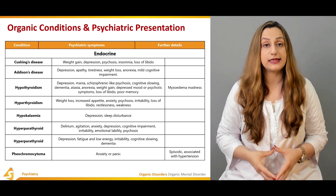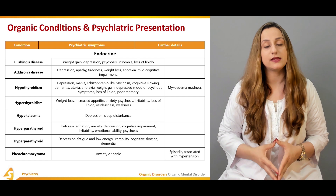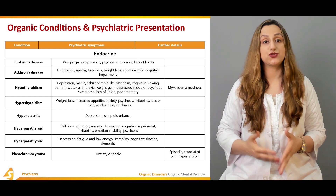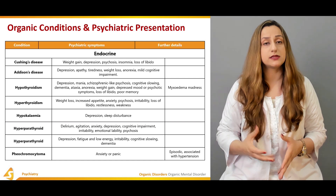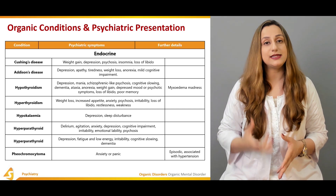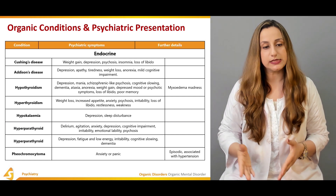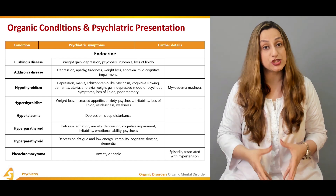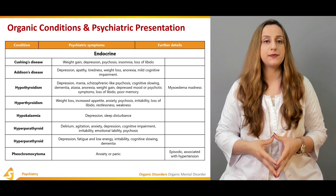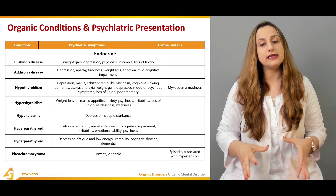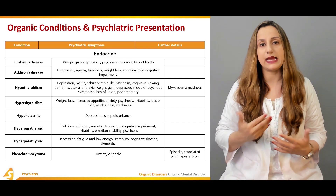Hyperthyroidism is characterized by weight loss, increased appetite, anxiety, psychosis, irritability, loss of libido, restlessness, and weakness. Hypokalemia presents with depression and sleep disturbances. Hyperparathyroidism presents with delirium, agitation, anxiety, depression, cognitive impairment, irritability, emotional liability, and psychosis. Hypoparathyroidism presents with depression, fatigue, low energy, irritability, cognitive slowing, and dementia. Pheochromocytoma presents episodically with anxiety and panic attacks, associated with hypertension.